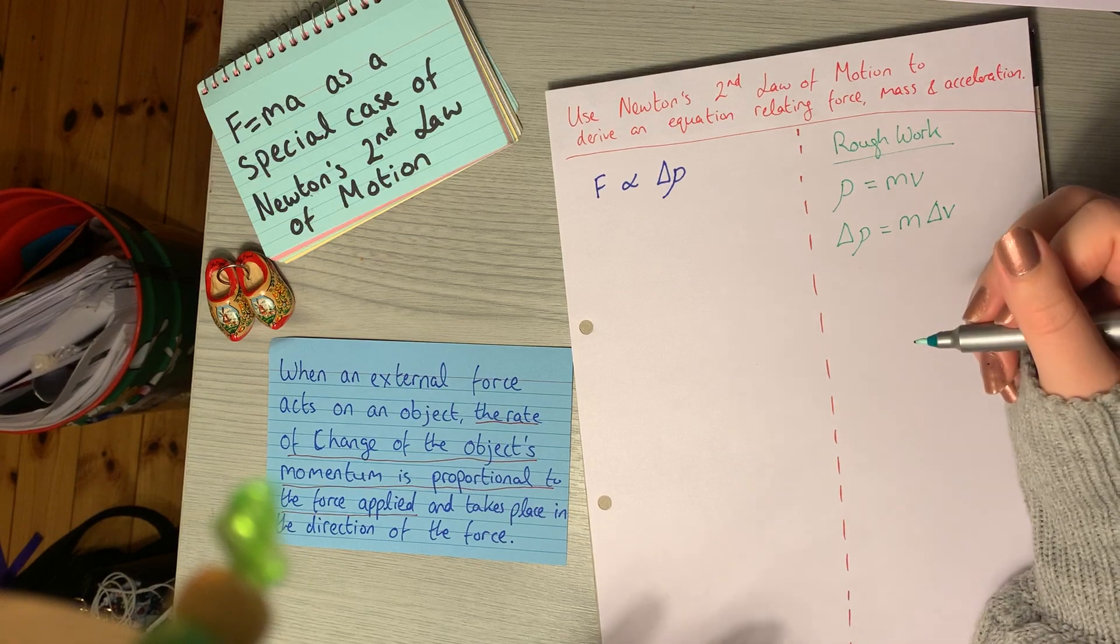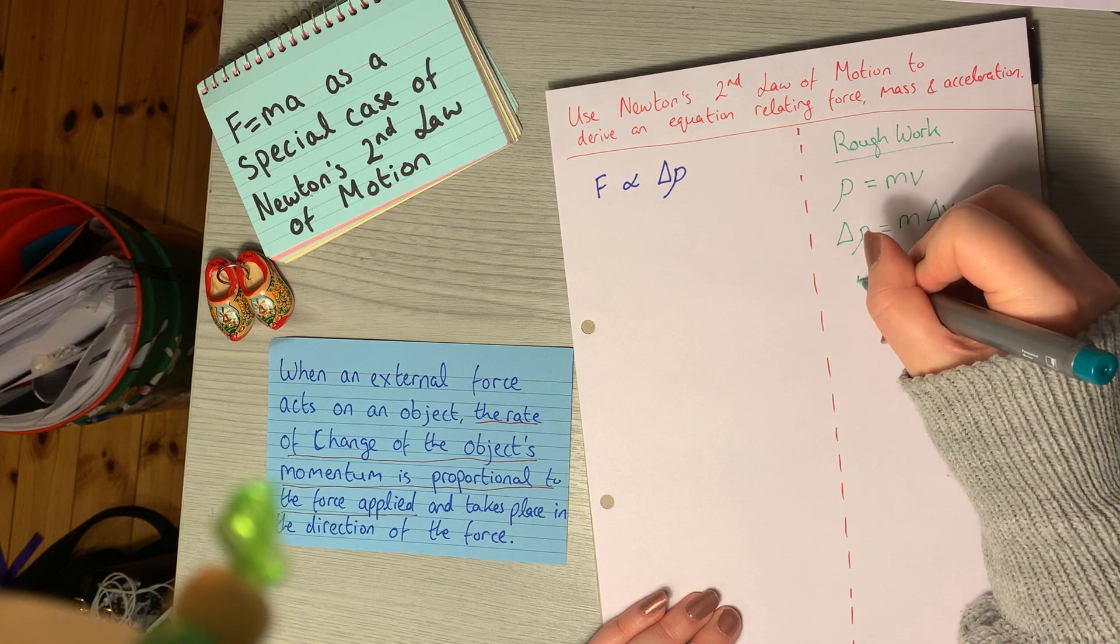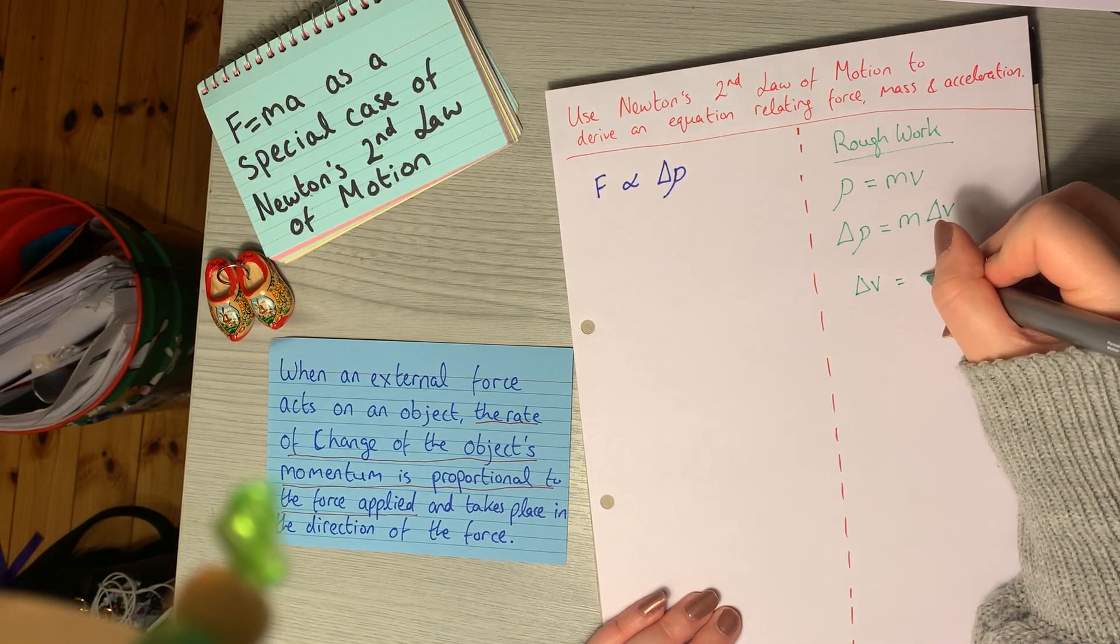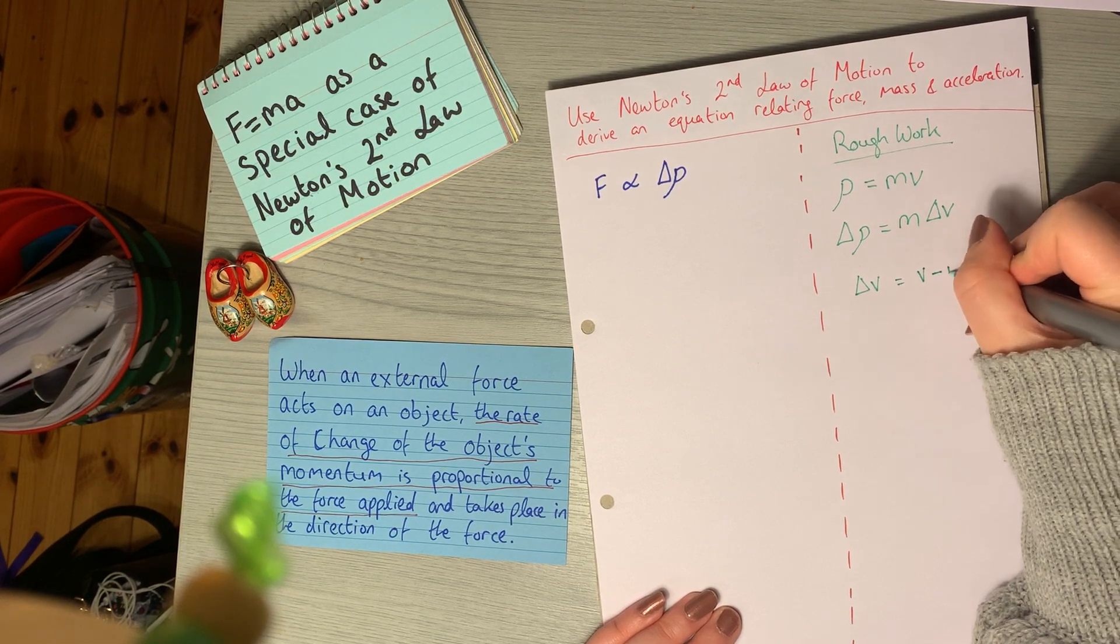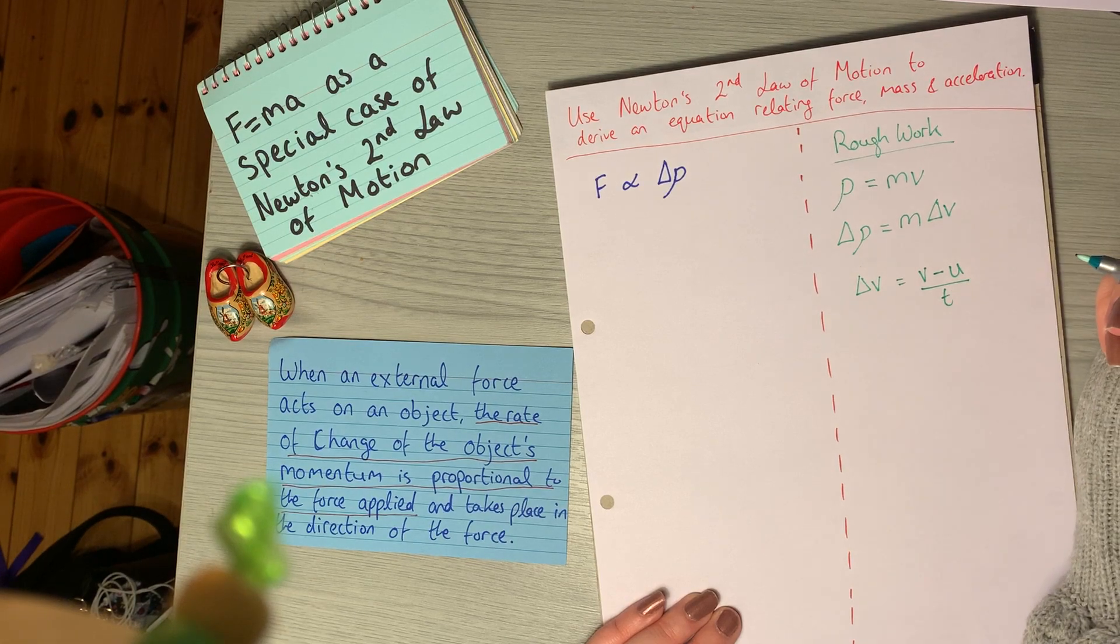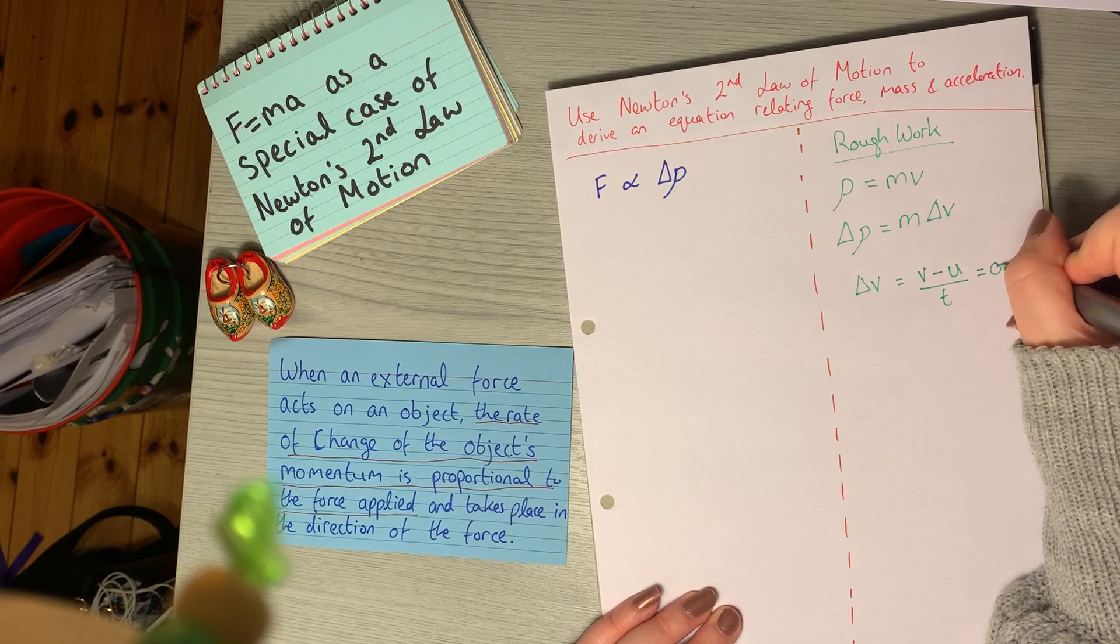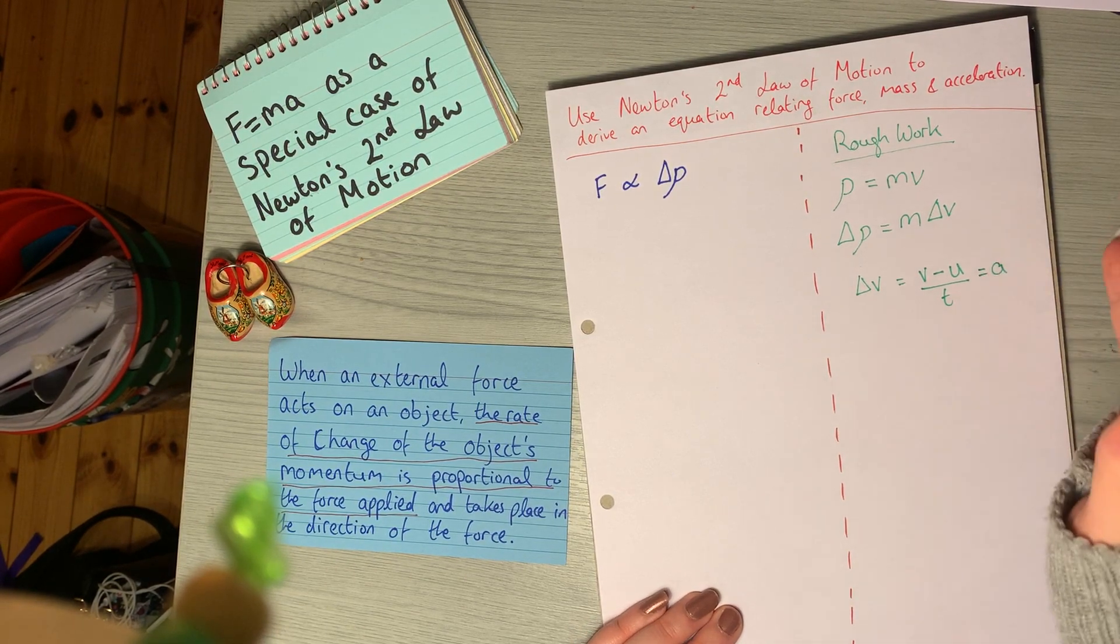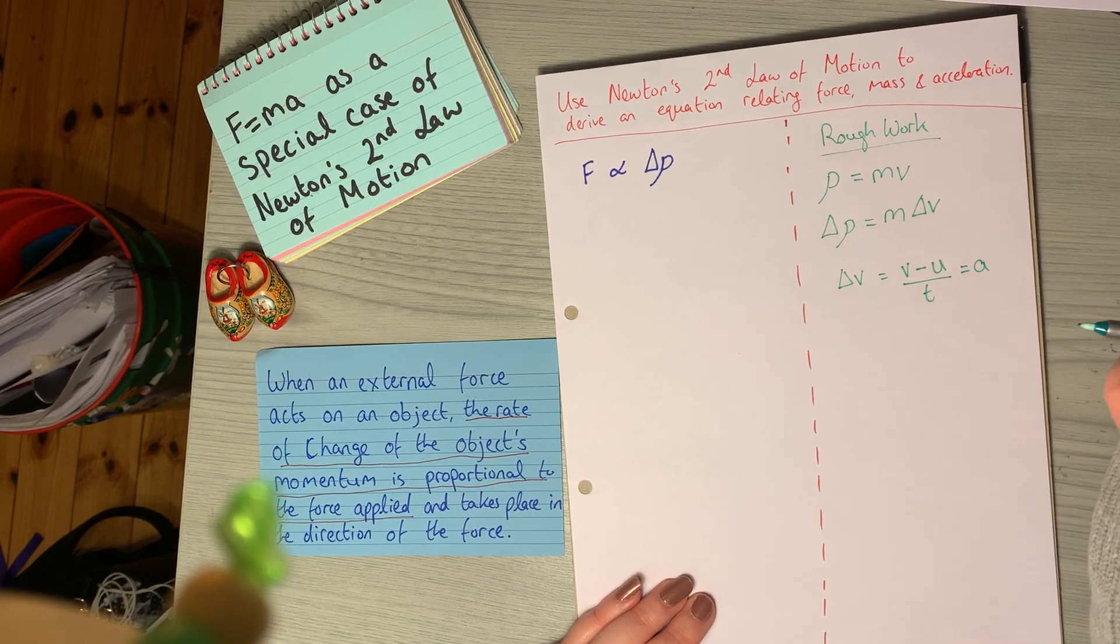You can write change in velocity in two ways. Delta V or change in velocity is equal to your final velocity V minus your initial velocity U over the time taken T. The other way you can write it is just as A, the acceleration, because the definition of acceleration is the change in an object's velocity.